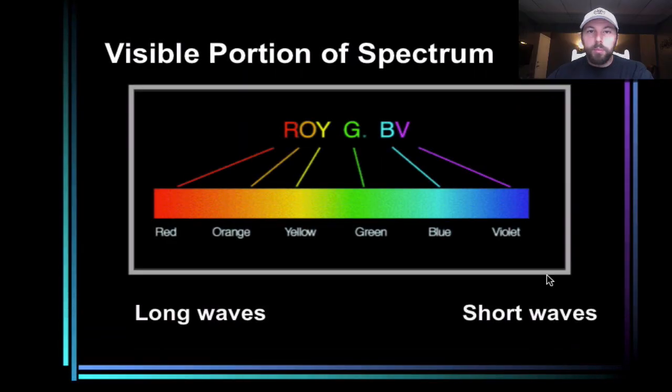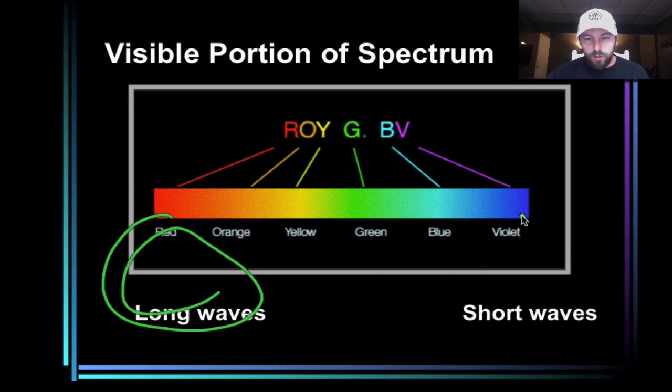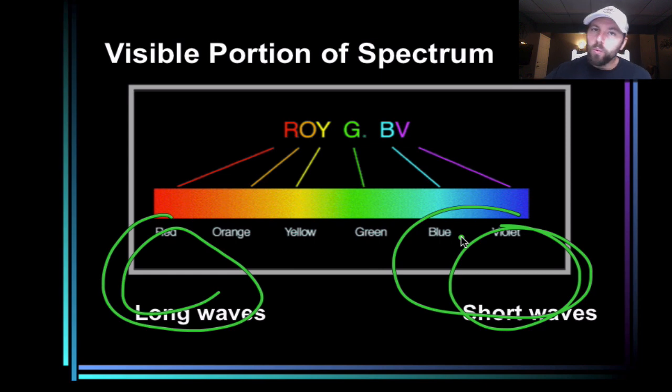Here's the visible portion of the spectrum again. These are definitely, you should probably know them, but once again, they're in our reference table. Roy G-Biv: red, orange, yellow, green, blue, indigo, which is right around here, and violet. And we can see the long wave associated with the red over here. Short wave with blue and violet. And once again, it's in the reference table, page 14.